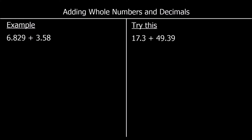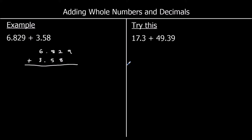Let's start with adding. The example is 6.829 plus 3.58. The first step is to line up the numbers: ones with ones, tenths with tenths, hundredths with hundredths, and thousandths with thousandths. 3.58 has nothing in the thousandths column — I can either write a zero or leave it blank. So we start adding from the smallest column: 9 plus nothing is 9.